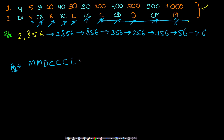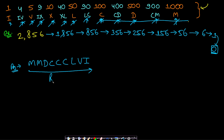6 ≥ 5 (V), so write V and subtract 5, leaving 1. 1 < 5, move past IV (4) to I (1). Write I and subtract 1, leaving 0. As soon as we reach 0, whatever notation we've collected is the Roman representation.